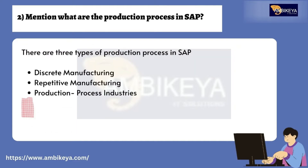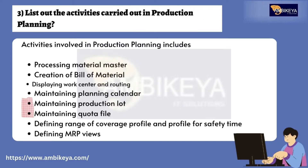Question number two: mention what are the production processes in SAP? There are three types of production process in SAP: discrete manufacturing, repetitive manufacturing, and production process industries. Question number three: list out the activities carried out in production planning. Activities involved in production planning include processing material master, creation of bill of material, displaying work and routing, maintaining planning calendar, maintaining production lot, and maintaining quota file.